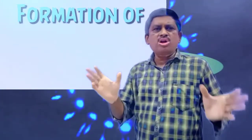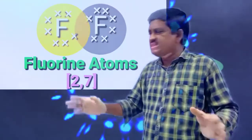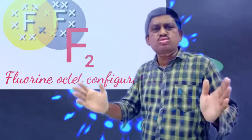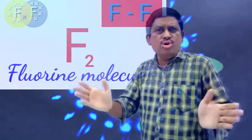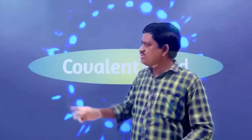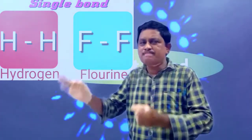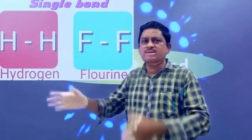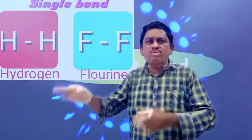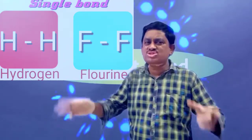In F2 molecule, two fluorine atoms are contributing one electron each. This contributing electron pair is equally shared between the two fluorine atoms, and these two fluorine atoms are acquiring a noble gas configuration. So, in the molecules of hydrogen and fluorine, one electron pair is participating between the two atoms. We can say that one electron pair participating between two atoms is called a single bond.